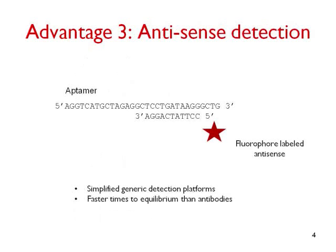Advantage 3. A lot of complicated and elegant aptamer-based detection strategies have been published. A real strength of aptamers is the natural double-strand homology of DNA. A great generic approach to detection involves the use of fluorescently labeled antisense oligos that bind to the aptamer, but are displaced by the aptamer binding to the target. The advantage over secondary antibodies is that we can change the length, and thus the displacement strength, of the antisense molecule at will — we can engineer an optimum detection system.